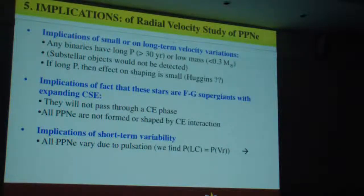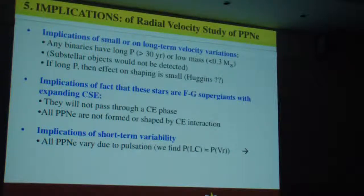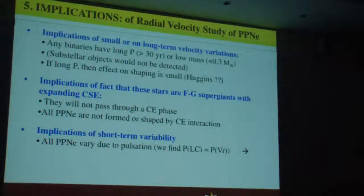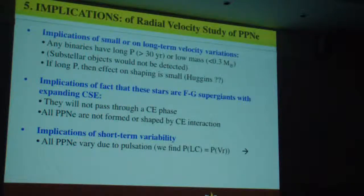The implications of small or no long-term velocity variations are that the binaries would have to have long periods or low masses — perhaps sub-stellar companions. One also has to consider: if they're too long-period, will they shape the nebula to give us the tight tori we see in edge-on objects? Furthermore, these are presently F and G supergiants with large circumstellar envelopes, indicating they're clearly not going to pass through a common envelope phase — and they haven't and they won't. So common envelope cannot explain these objects. I'm pretty convinced they're going to turn into planetary nebulae, but not via common envelope.